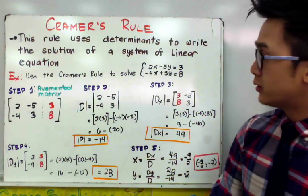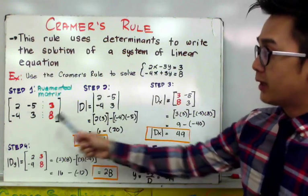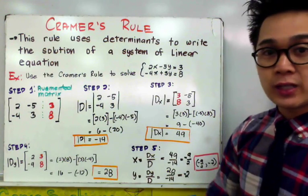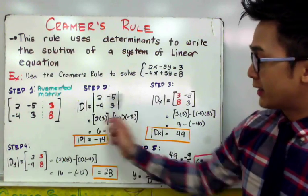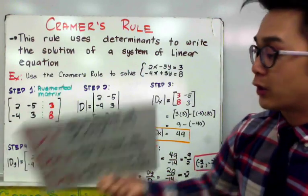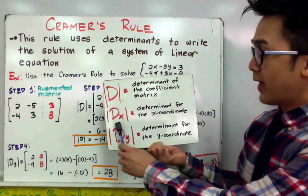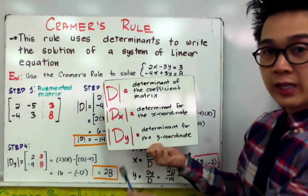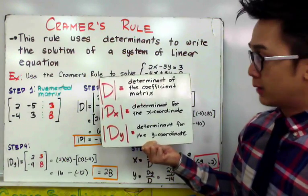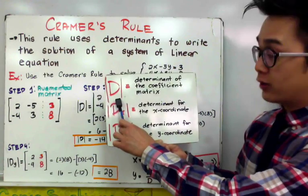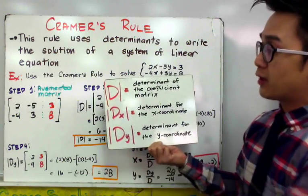The first step to find the solution of our linear system is to change our linear system into its augmented matrix. After that, we find the determinants of those matrices using each transformation. The transformations we're going to use are: the determinant of the coefficient matrix, the determinant of x, and the determinant of y. The second step is to find the determinant of the coefficient matrix.